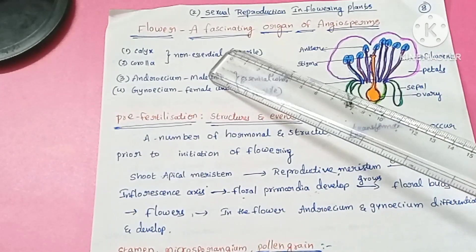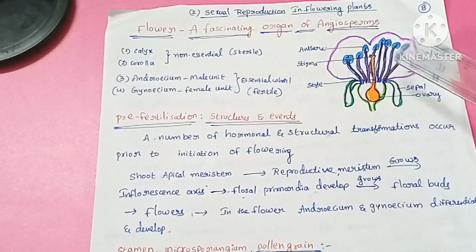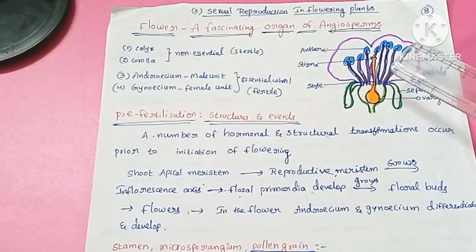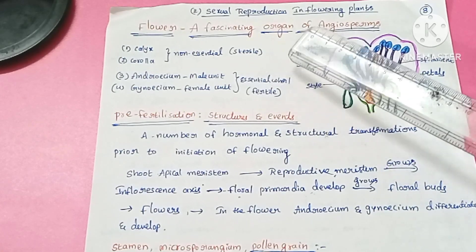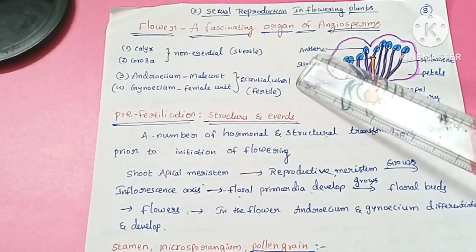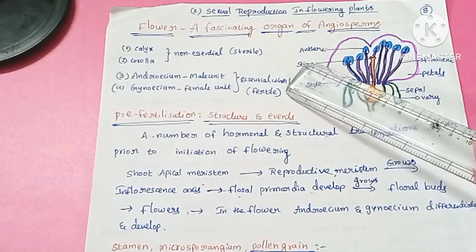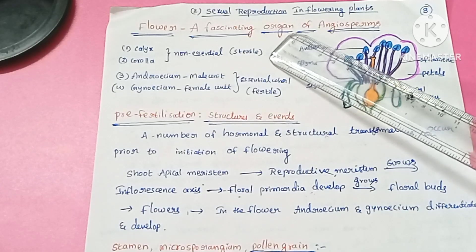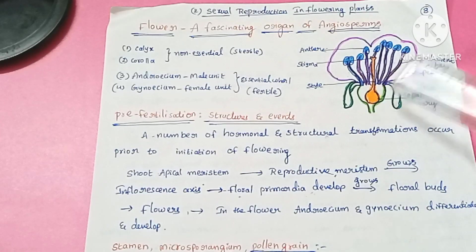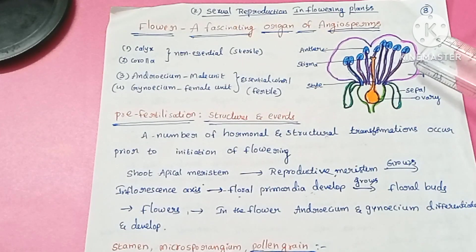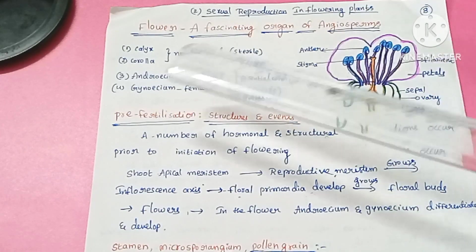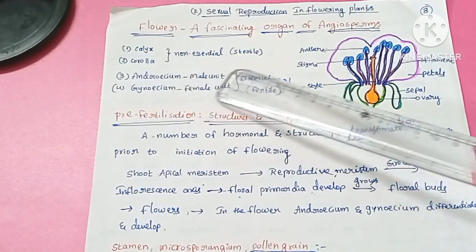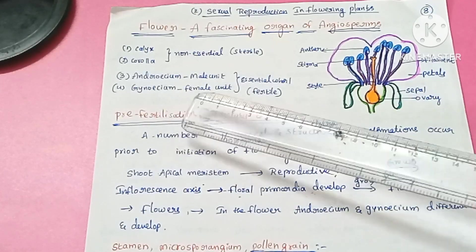The flower consists of two whorls: one is the essential whorl and one is the non-essential whorl. The non-essential whorl includes calyx and corolla — that is, only sepals and petals together.